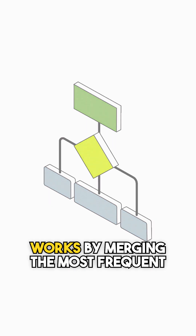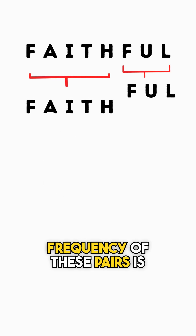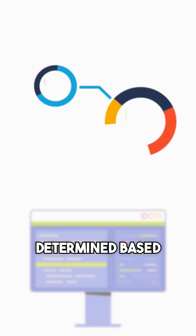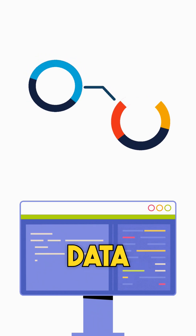BPE works by merging the most frequent pairs of symbols to create subwords. The frequency of these pairs is determined based on a predefined vocabulary from the training data.